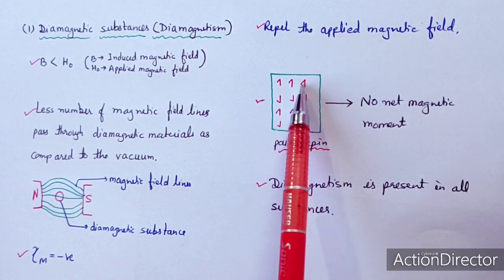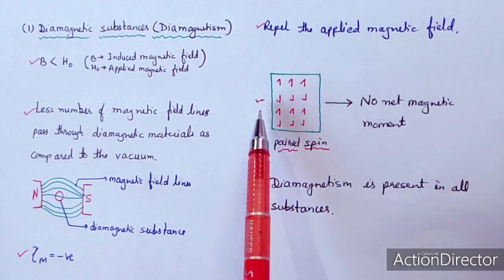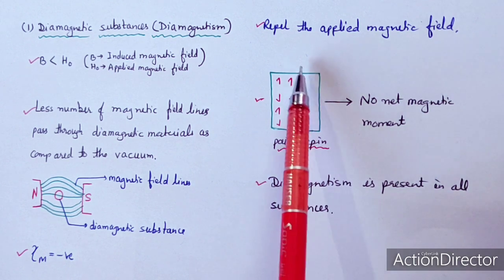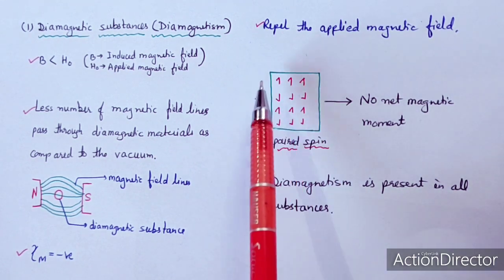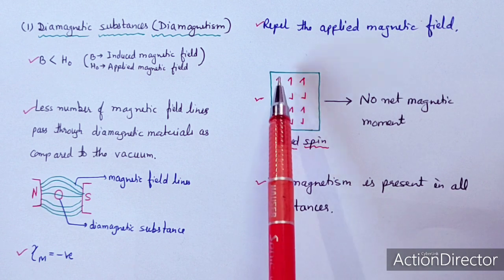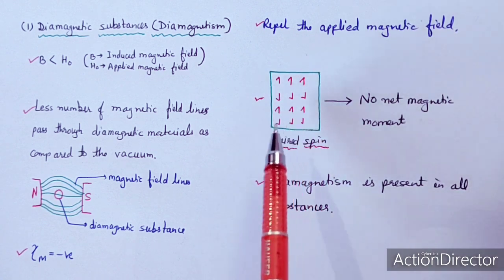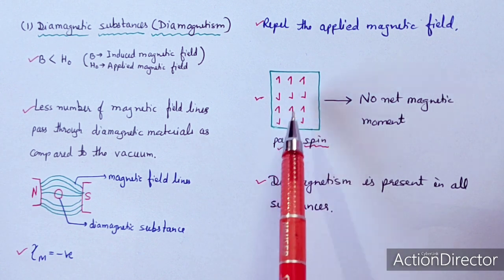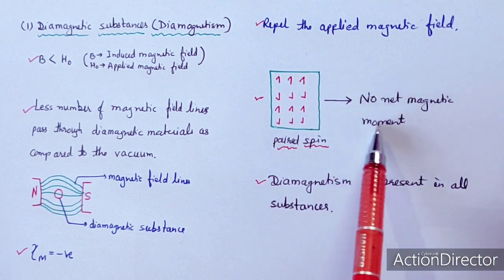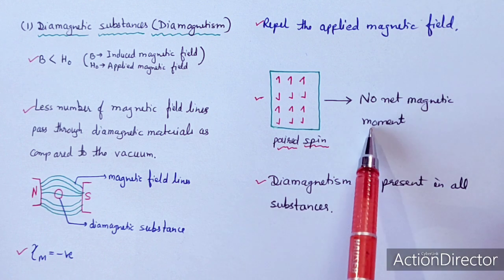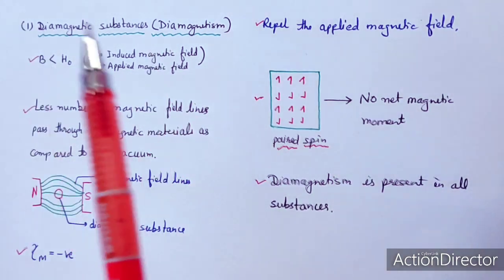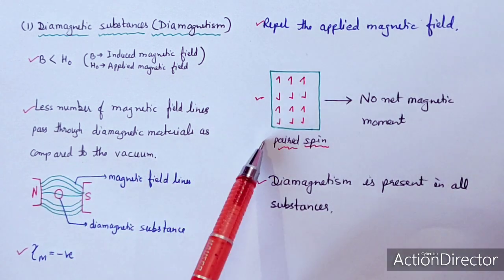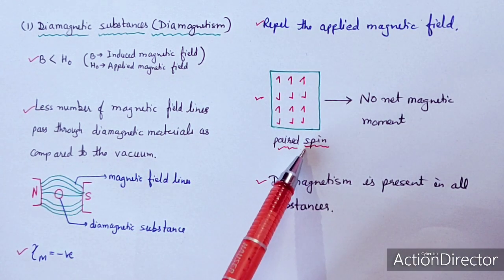You can see that three electrons have upward spin and three have downward spin, then three more have upper spin and three have lower spin, so the total spin becomes equal to zero. The electrons have paired spin, so no net magnetic moment will be there. Diamagnetism arises from the paired spin of electrons.